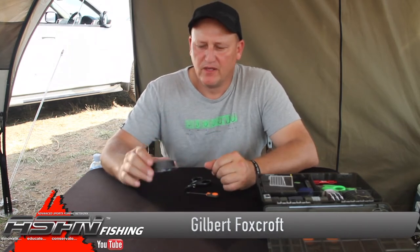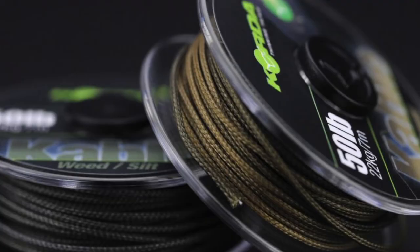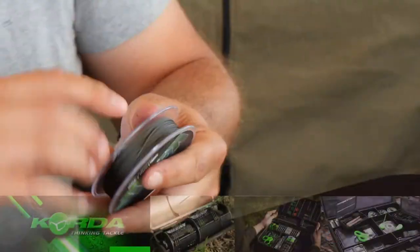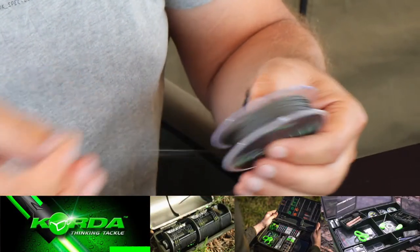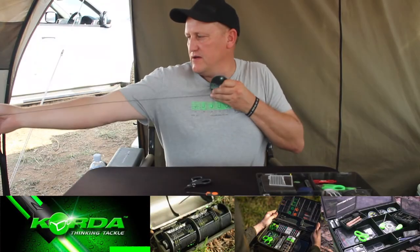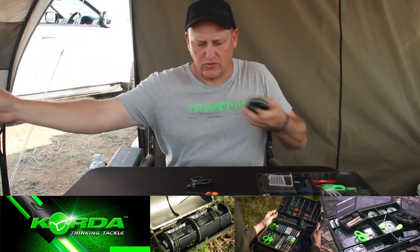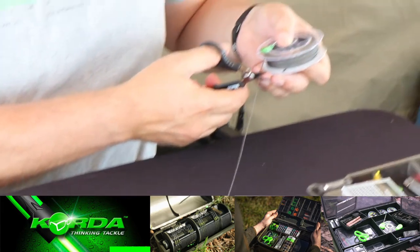I've had loads of requests from people asking us to show you how to splice lead core properly. So what I've got is the Korda cable 50 pound lead core. All I do is choose a length, normally just short of a meter, and I cut it off.